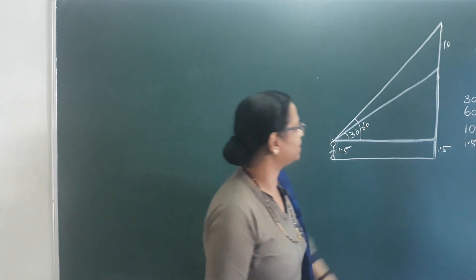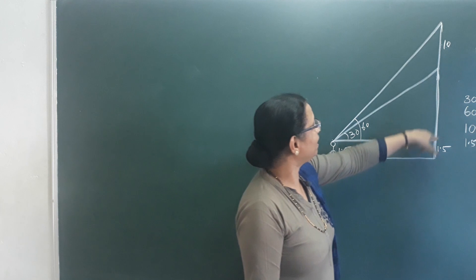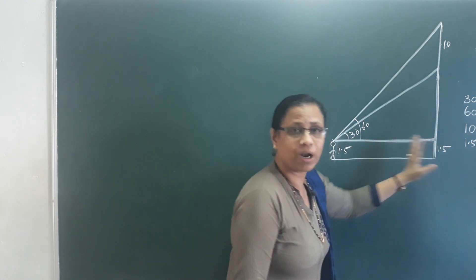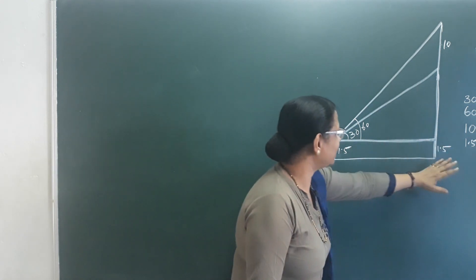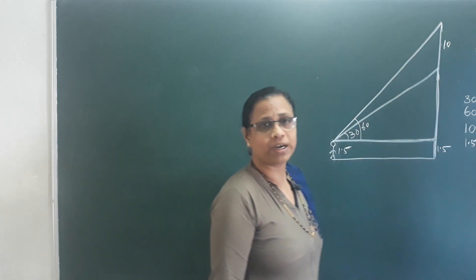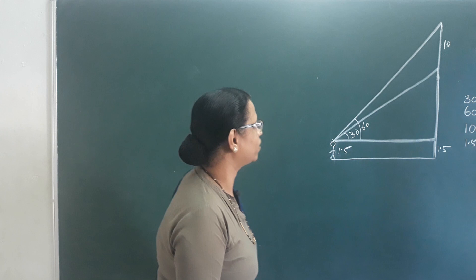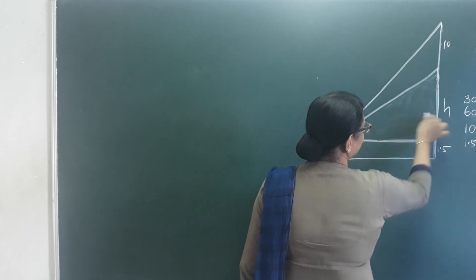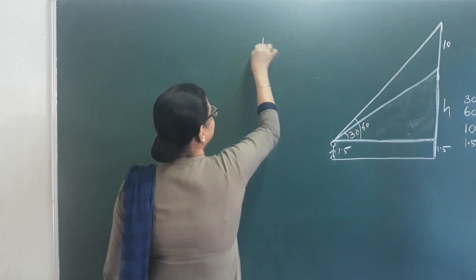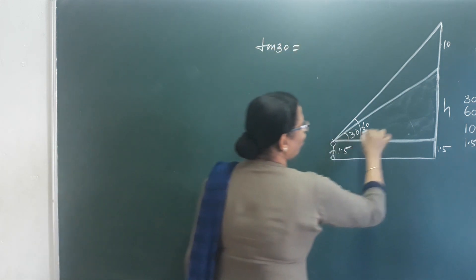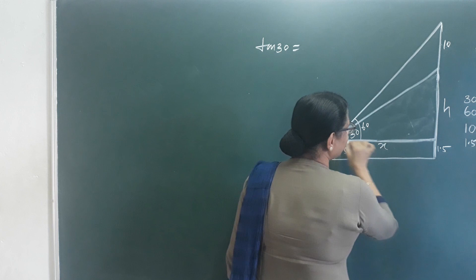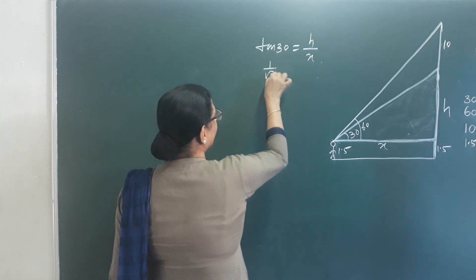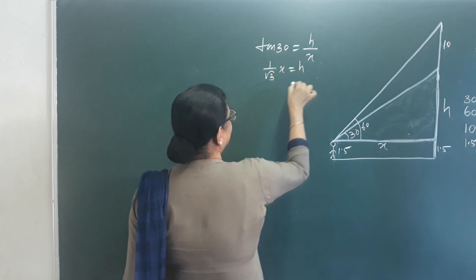How far is the boy located from the building? We can see the height of the total building. Let's draw this. This is H. Let's consider the first triangle. Taking tan 30: tan 30 is equal to opposite side by adjacent side, which is H by X. Tan 30 equals 1 by root 3, so X by root 3 equals H. That is Equation 1.